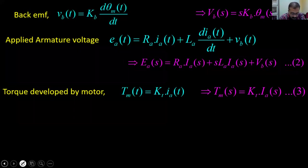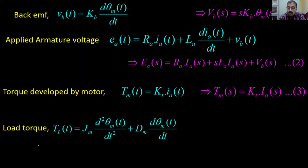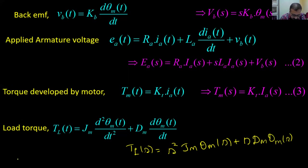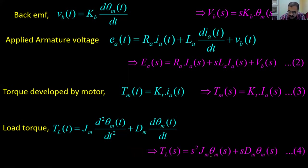For the load torque, the load has inertia J and viscous friction, giving: Jm·d²θm/dt² + dm·dθm/dt. Taking the Laplace transform: Tl(s) = s²·Jm·θm(s) + s·dm·θm(s), as shown here.